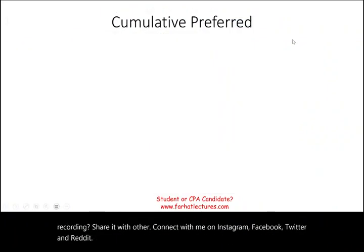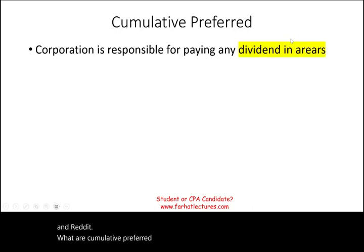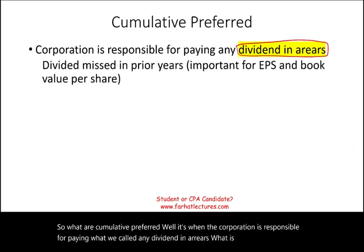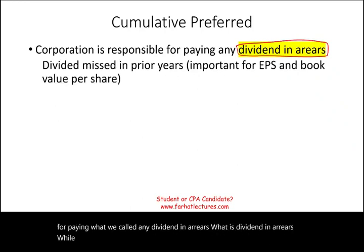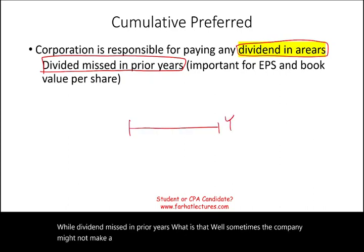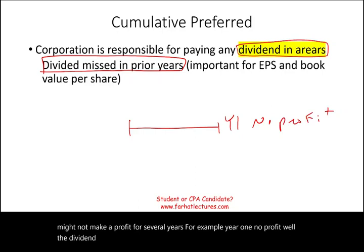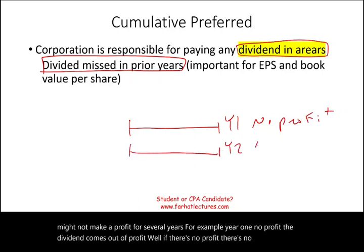Cumulative preferred stock means the corporation is responsible for paying any dividends in arrears — dividends missed in prior years. For example, if the company makes no profit in year one, there's no dividend. If there's no profit in year two, again no dividend can be paid.